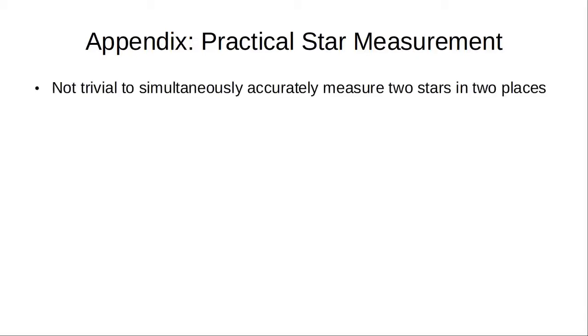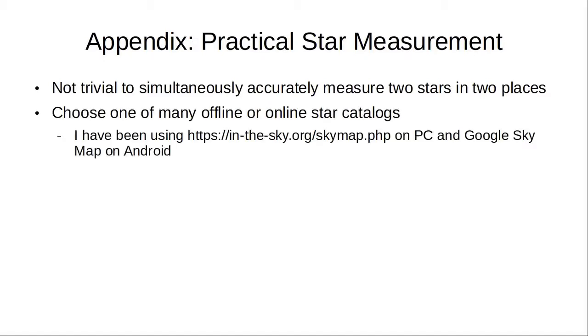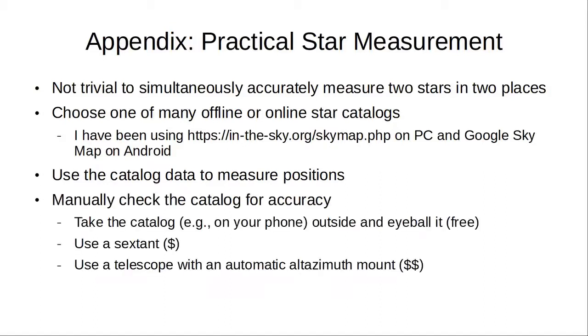As an appendix, I want to talk about, in practice, how one can go about measuring star positions. It's not completely trivial to measure simultaneously the position of two stars in two locations. So, the first step is use a star catalog. There are lots to choose from, including on mobile phones, and this will give you easy access to positions for any location at any time you want. However, this immediately calls into question the goal of not relying on any external assumptions. So, we check the catalog for accuracy, either just by eyeballing it, or using a sextant, or using a telescope. So, I'll talk about each of these in turn.